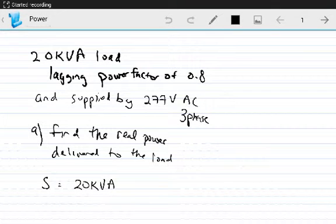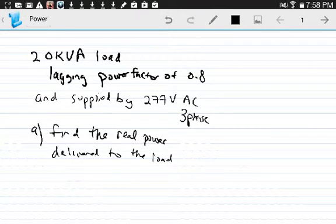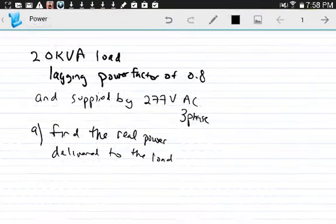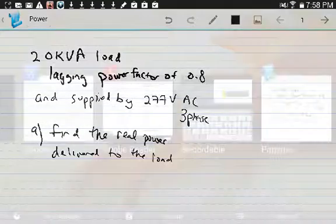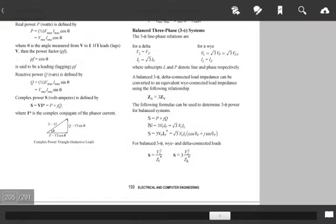Okay, we have a power problem with two parts. The first part: we're given a 20 kVA load with a lagging power factor of 0.8, supplied by 277 volts AC three-phase. The first part asks you to find the real power delivered to the load.